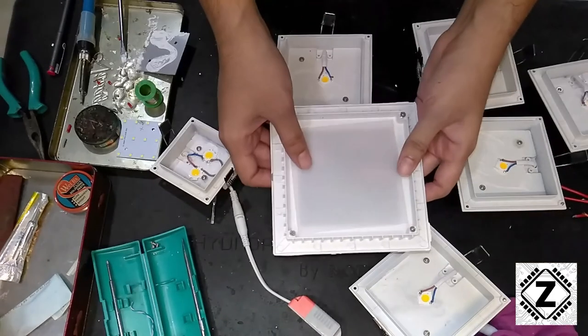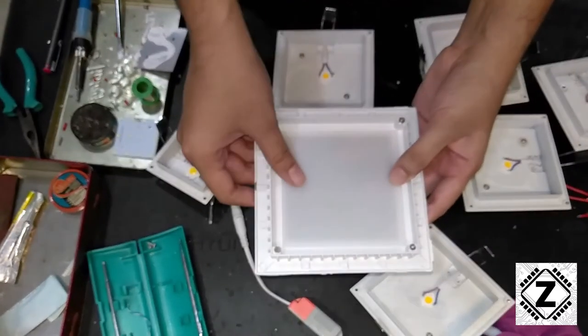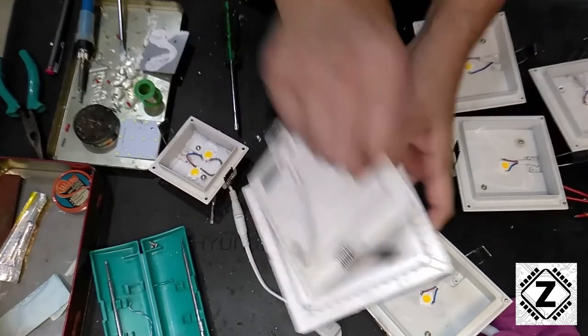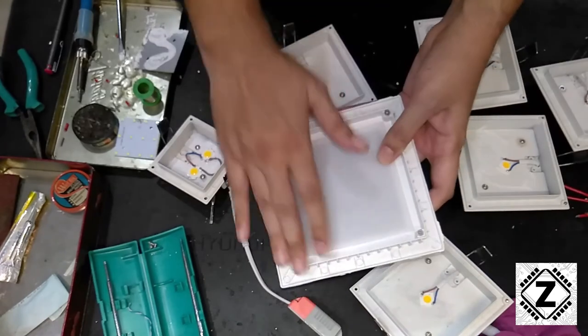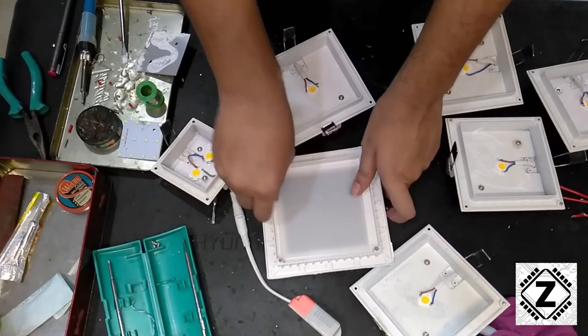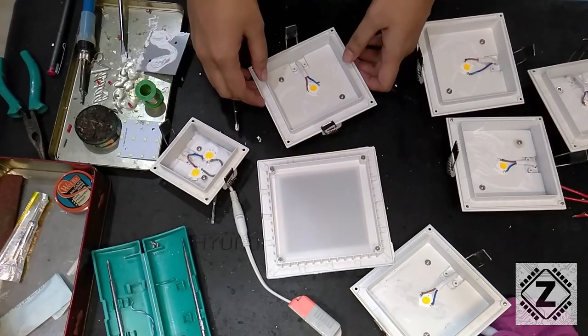All right, so assembling these LED pieces back is a pretty simple affair. We just need to place this diffuser over here first and there are these four screws. So we put the panel over here and we tighten these four screws. By the way, if you like seeing videos like this, make sure to subscribe to this channel and share this video with your friends. Take care and have a nice day.